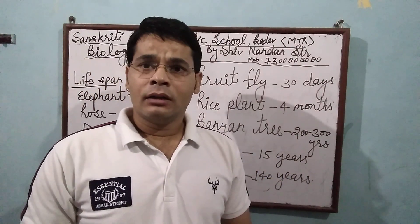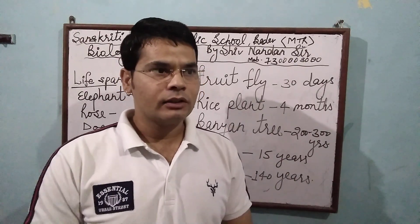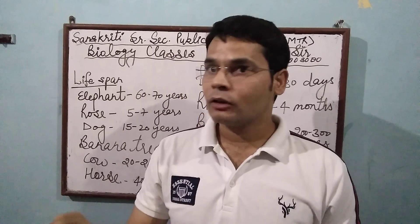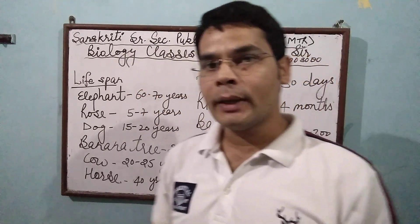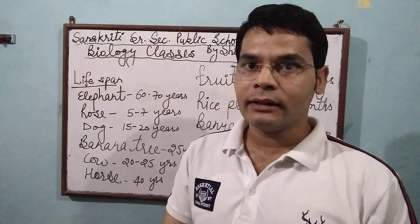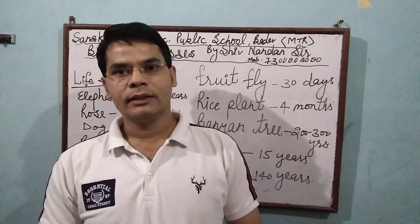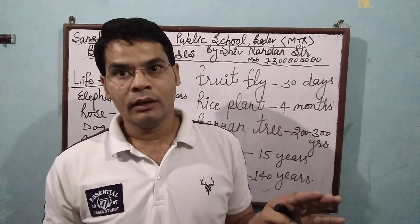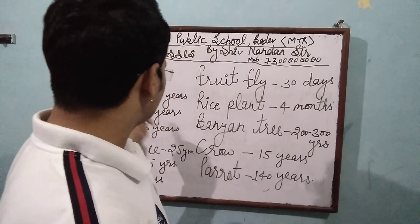Life Span, as we understand, is the period from birth to death of an organism — that is called its life span. If an organism dies by accident, that is not natural death. Every organism that comes into the world eventually dies. However, single-celled organisms like Amoeba and Paramecium do not have natural death, so biologically they are immortal.